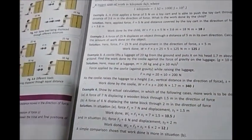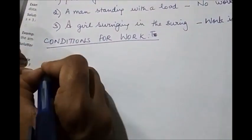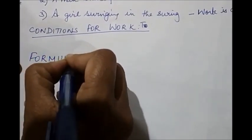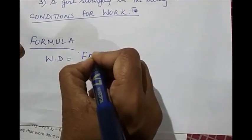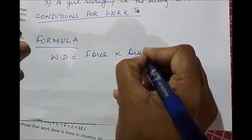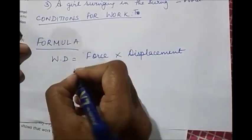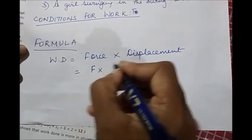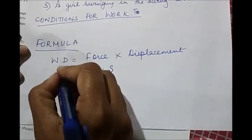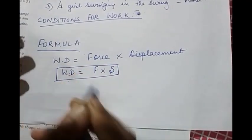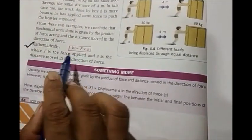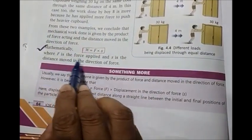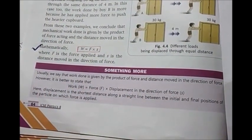We will go to the next topic. That is measurement of work. So that is basically the formula that we use to calculate work done. Work done formula is force into displacement in the direction of force. Force is represented by F. Displacement is represented using a letter S. So this is the formula that we use to calculate force. So you see this in page 64. Mathematically, work done is F into S, where F is the force applied, S is the distance moved in the direction of force.